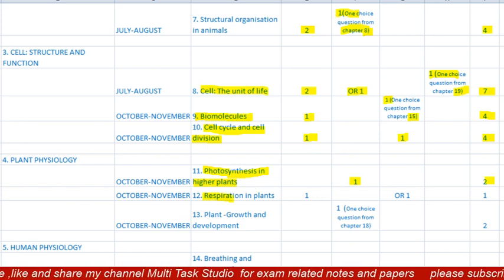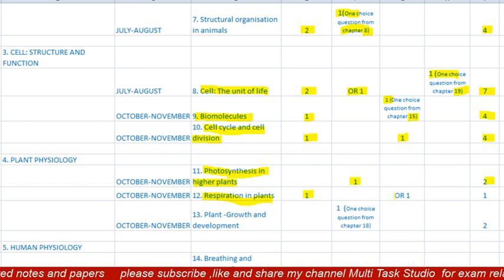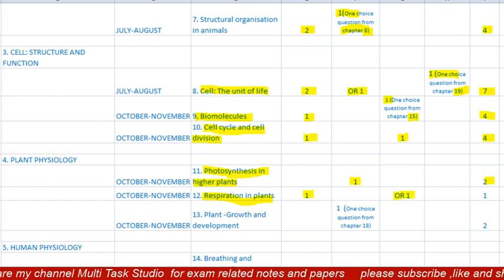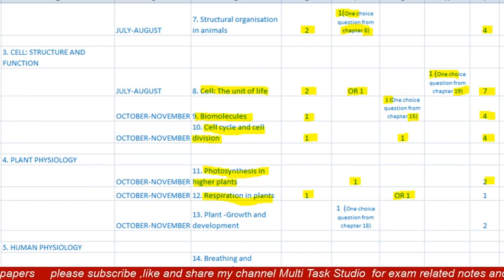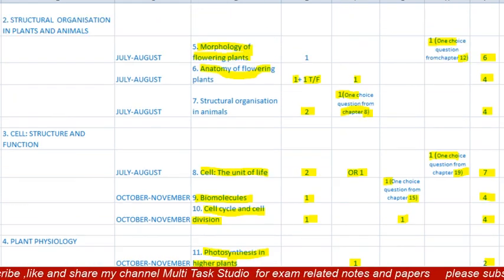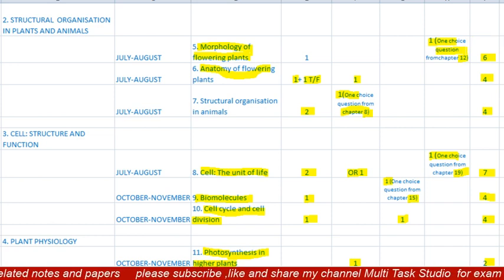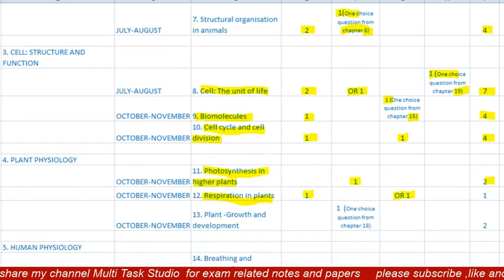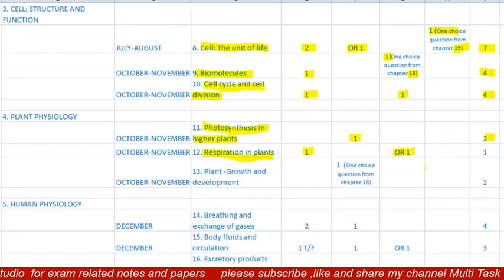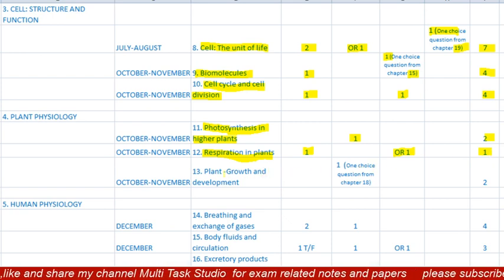The twelfth lesson is 'Respiration in Plants.' There will be one MCQ of one mark, and one question of three marks. This three-marks question has a choice — one option is from lesson 5 and the other is from lesson 12. Total paper from this lesson will be one mark, with the three-marks question being a choice question.